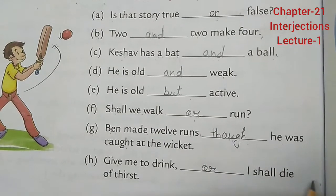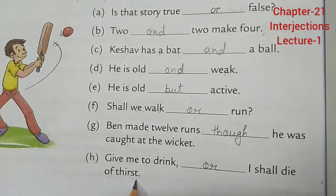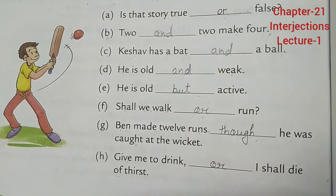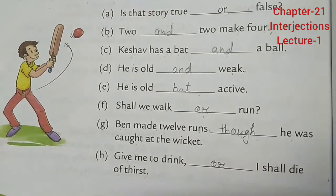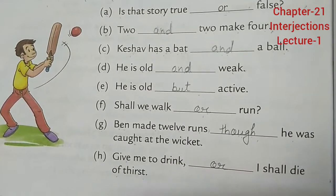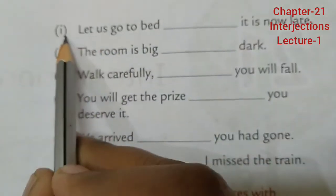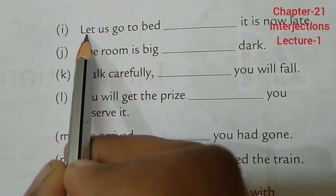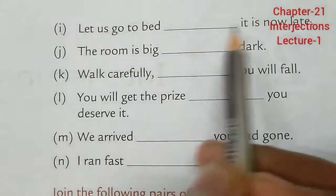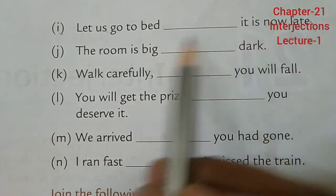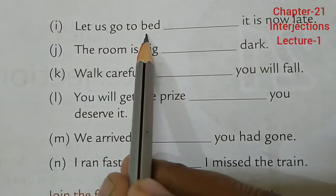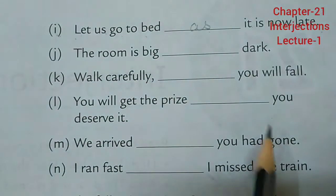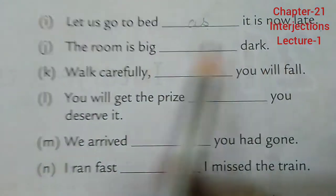(h) Give me to drink or I shall die of thirst. Now let's move to page number 81. (i) Let us go to bed as it is now late.